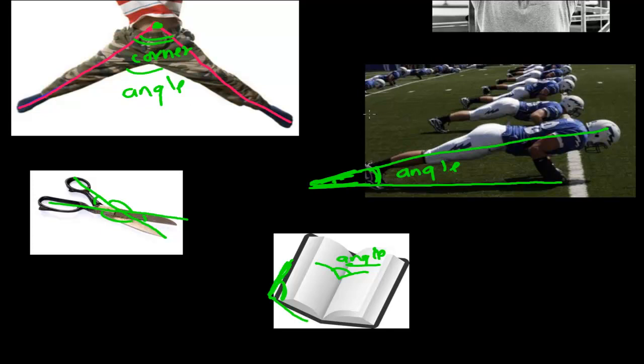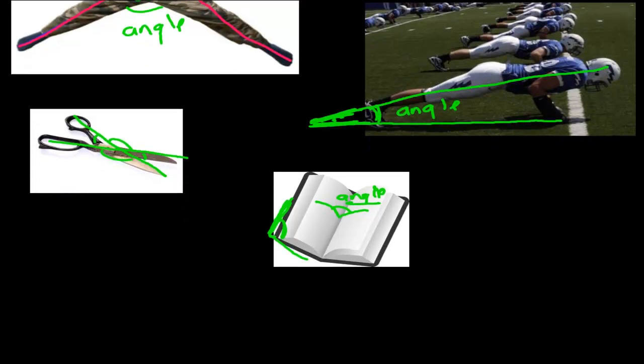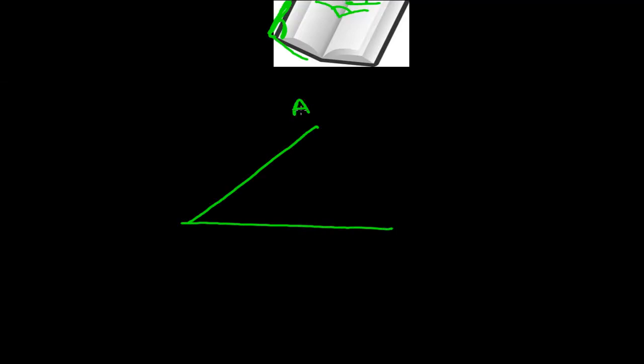So I think you now understand what an angle is. Now let's learn a little more deeply. Suppose I have two line segments: AB and BC. They intersect at point B. This intersecting point B is called the vertex.